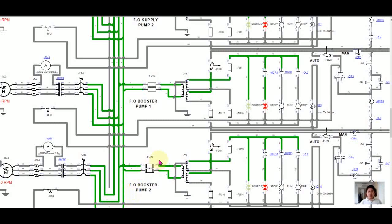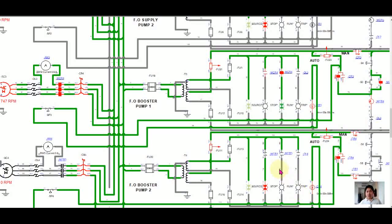Now I will switch on the circuit breaker for fuel oil booster pump number one and fuel oil booster pump number two, and release the emergency stop for both. You now have current flowing in this circuit. I will switch on number one in automatic, and the same operation applies as with the fuel oil supply pump. As you can see, fuel oil booster pump number one is now running.